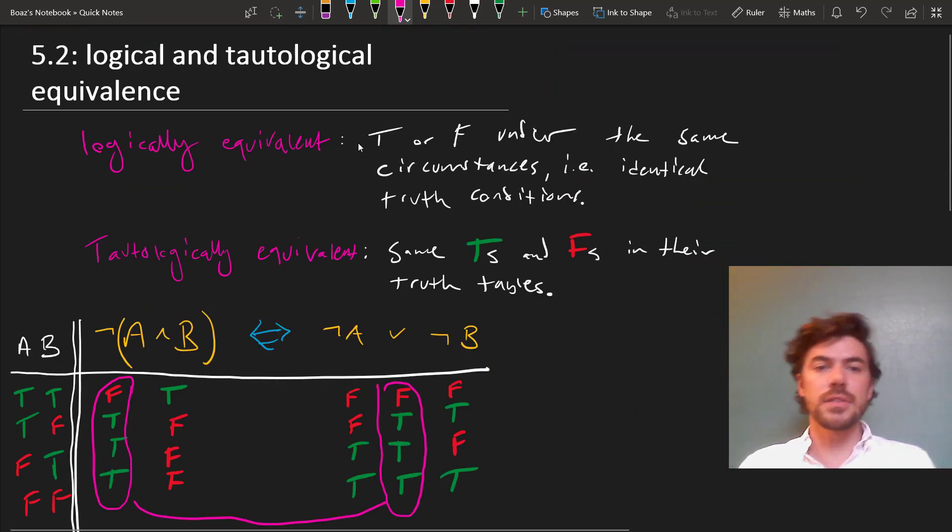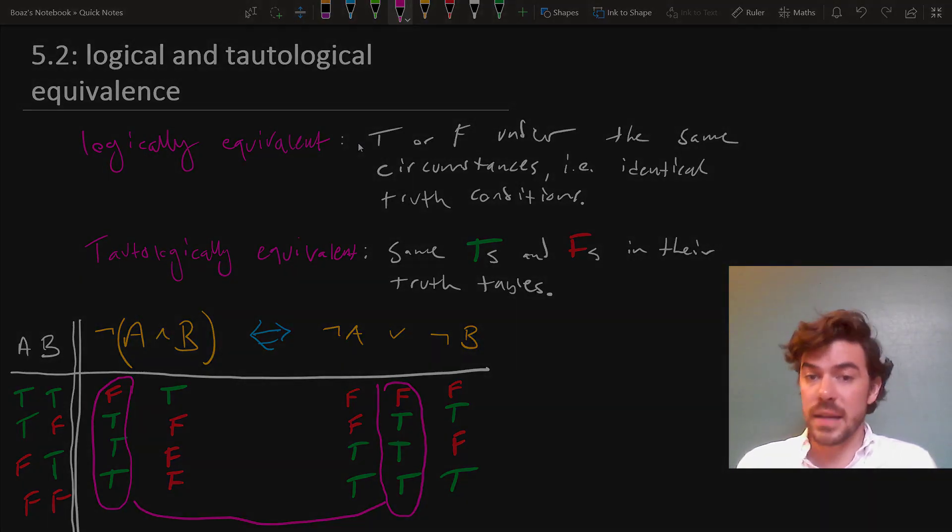So in sum, two sentences are logically equivalent if they have the same truth conditions, and they're tautologically equivalent if they have the same patterns of T's and F's in the truth tables under their main connectives.